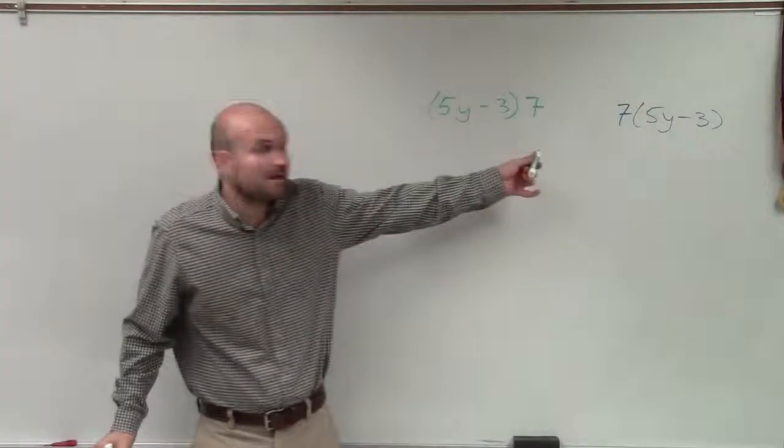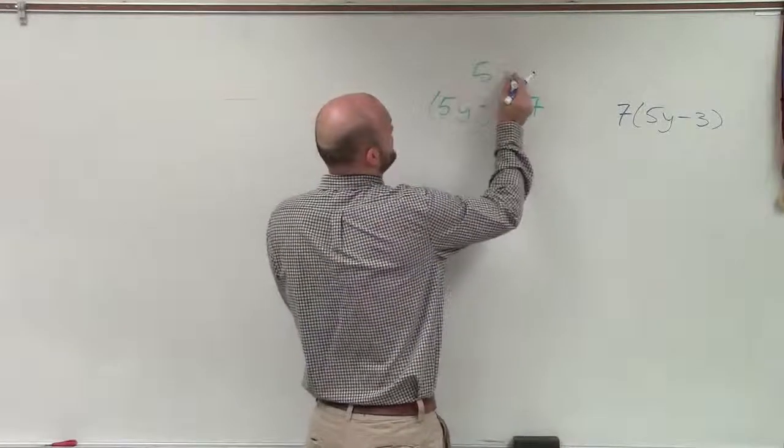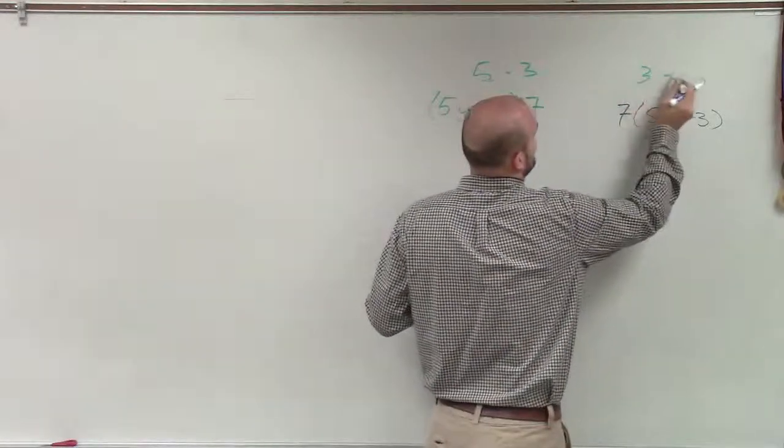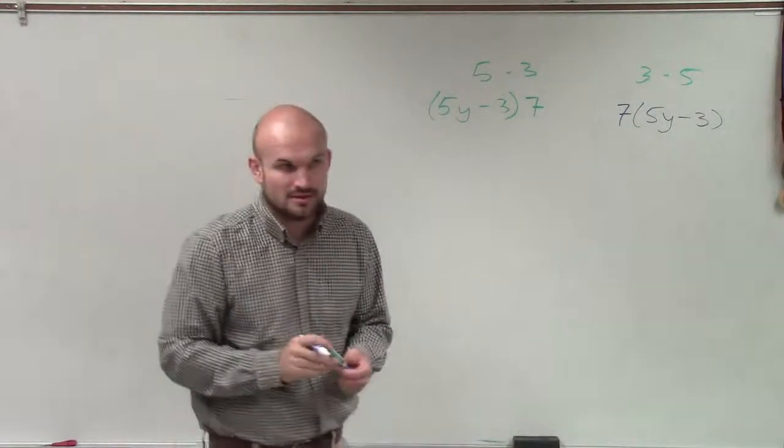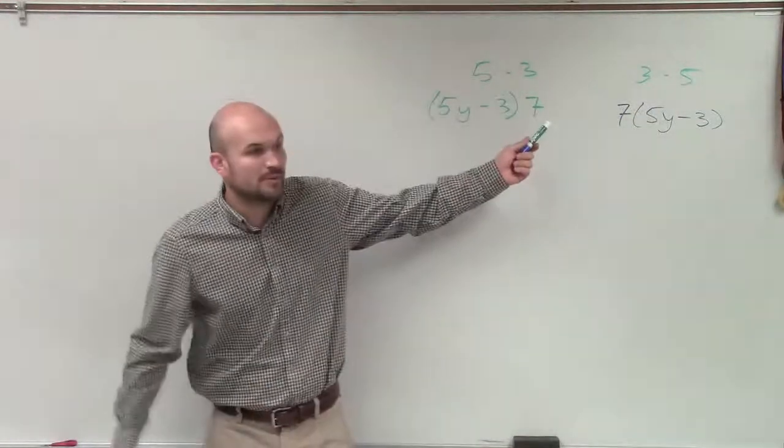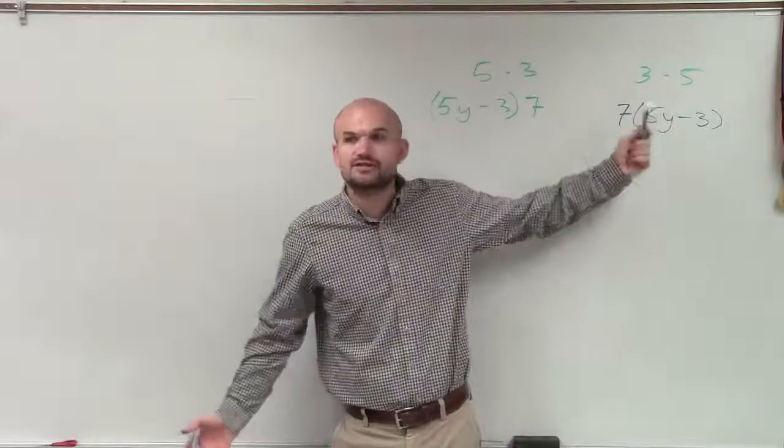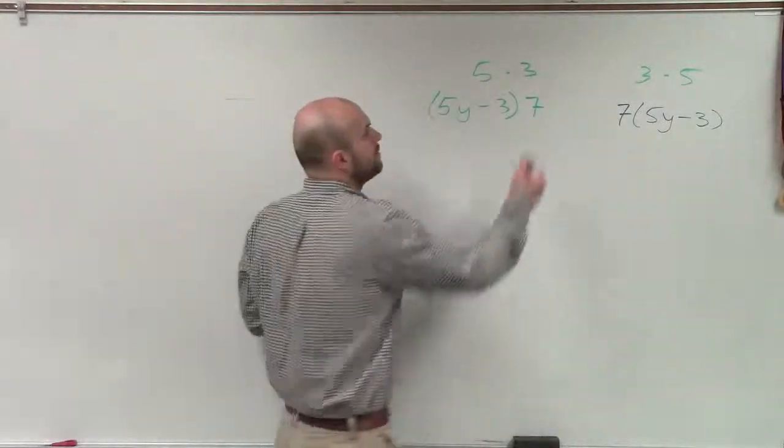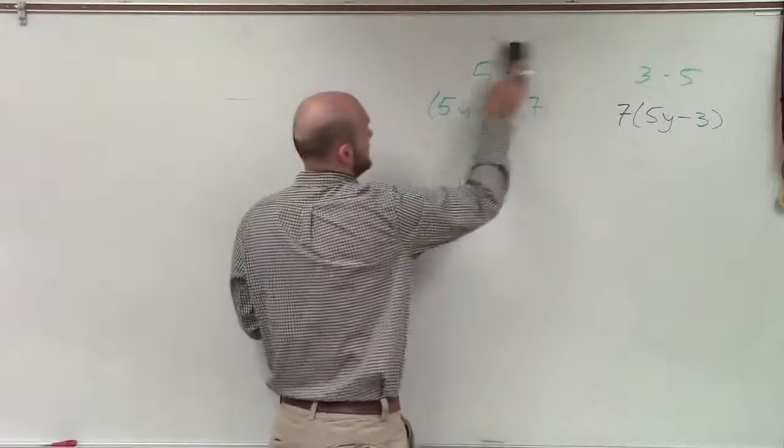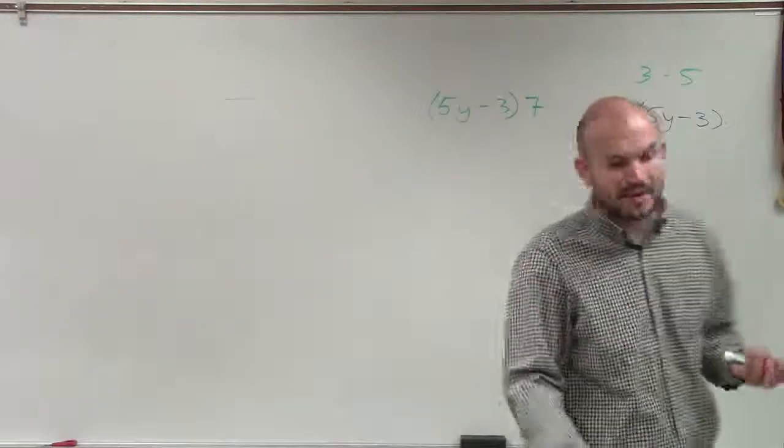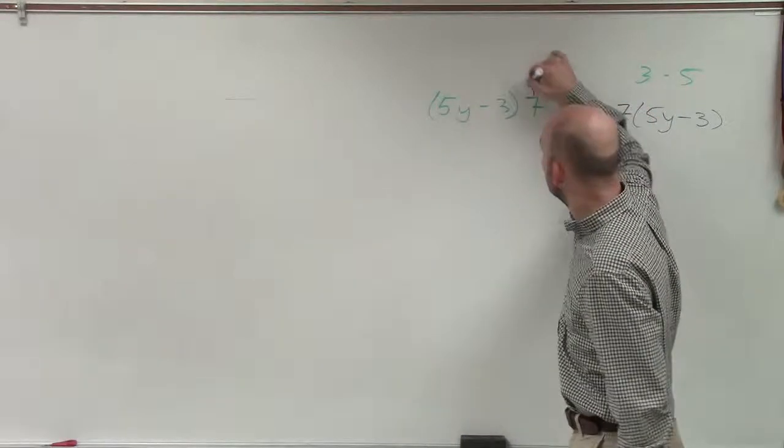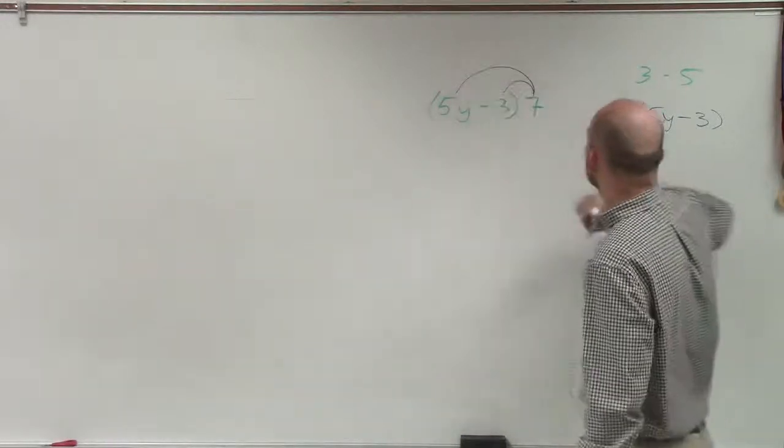So you could write it either way, right? This is the same thing as if I did 5 times 3 or 3 times 5. It doesn't matter which way you multiply. So if I multiply with my distributive property on the right side or on the left side, you're still going to be doing the same thing. And what I'm talking about is when you have a multiplication by an expression in parentheses, you need to make sure you multiply this term times both of these terms.